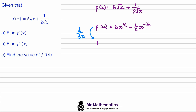This gives us f'(x). We bring the power down — this becomes 3x — then take away one from the power to get negative one half. We do the same for the next term, giving us negative one quarter, and then take away one from that power to get x to the minus 3/2.